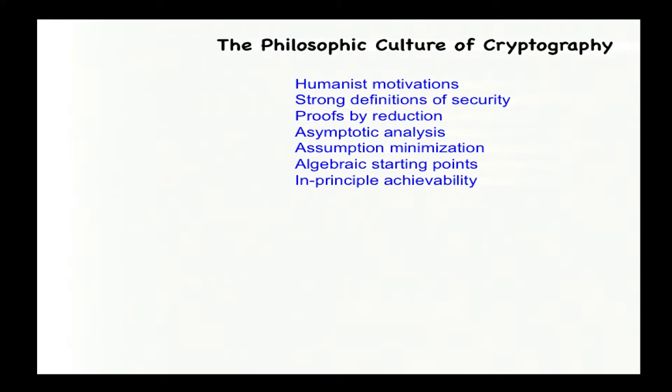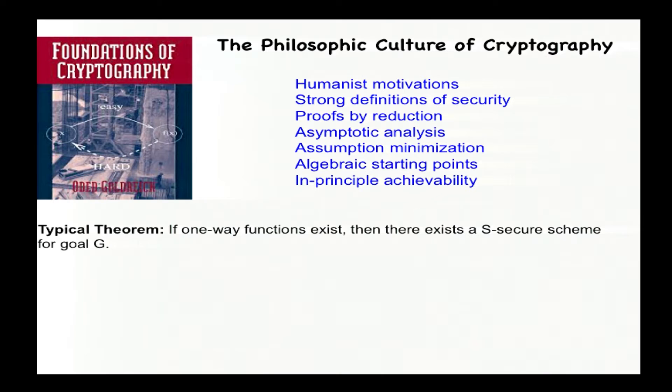So cryptographically, the culture we are looking at defined itself by these kinds of themes: humanist motivations, strong definitions of security, proofs by reduction, asymptotic analyses, and so on, as embodied, for example, now in Goldreich's textbook. And good work was that which reflected these themes. Work which didn't was relatively minor and uninteresting.